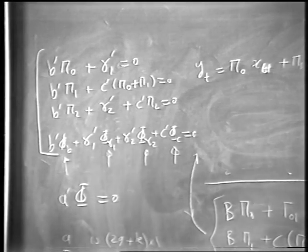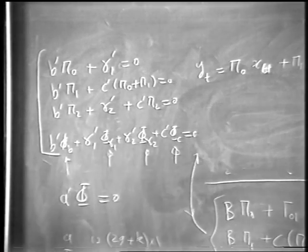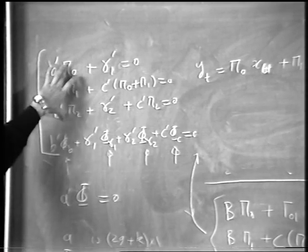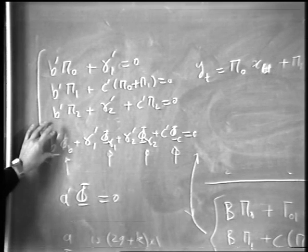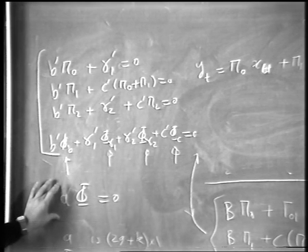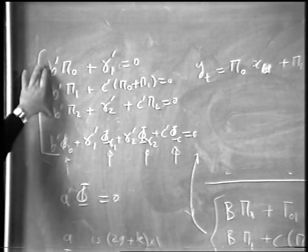Now, I've got also these sets of restrictions. So I complement the restriction implicit in the reduced form of structural parameters with a set of restrictions which I have imposed as a homogeneous set to identify. These are all identifying restrictions. These are restrictions implicit in the structural model.